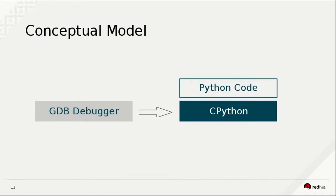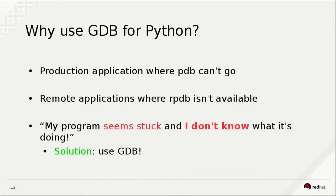Some of you might think: I ran strace on a Python process, but Python is C — CPython is C. So if you can use strace to debug a program, why not use GDB? We want to use GDB because it will allow us to attach into a production application that is currently running without losing the state. We can attach to a live process and debug whatever we want, like PDB. We can also use it on remote applications. GDB has neat features for remote debugging, and unlike RPDB which needs pip, GDB is something very common and most environments should have it. If you can attach to a program, it will answer the question: my program seems to be stuck and I don't know what it's doing.